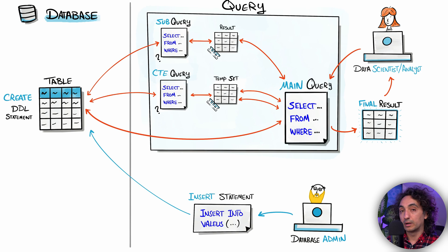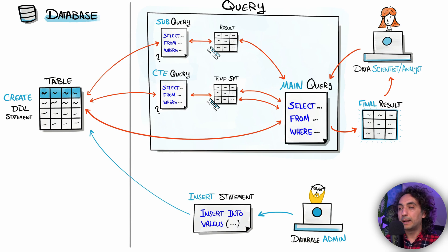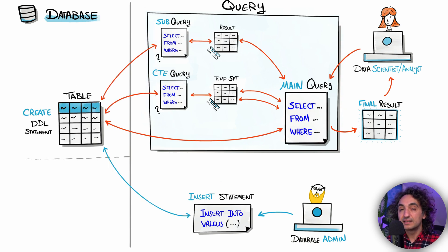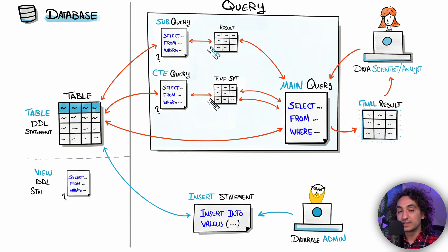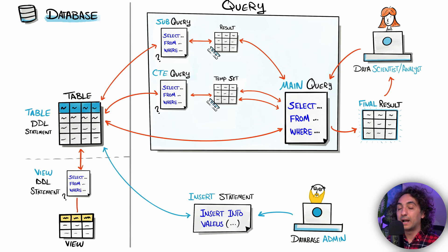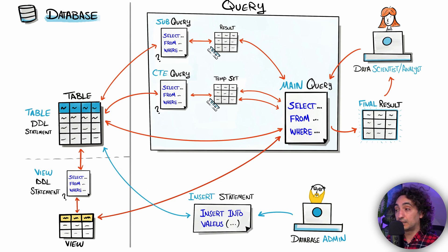All of that — subqueries, CTEs, and the main query — happens within one single query. But if she has written amazing code that others could benefit from, she can persist this logic in the database as a view. All other users and analysts can then benefit from this logic without having to write it again — they simply query the view, making their lives easier. She can also use this view in her own main query.